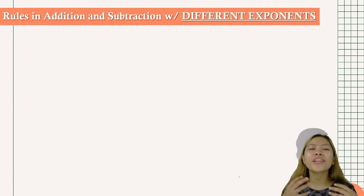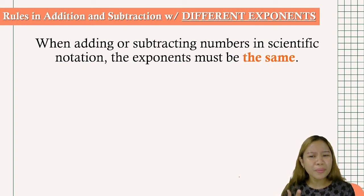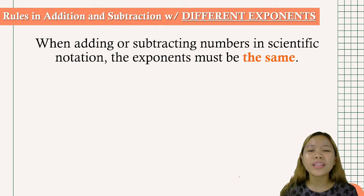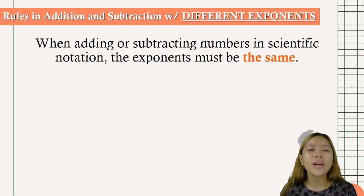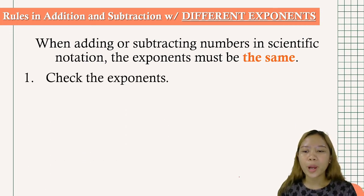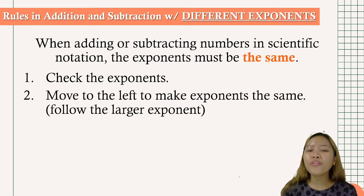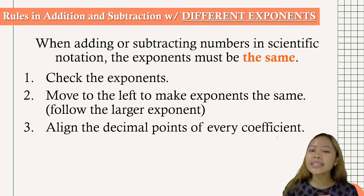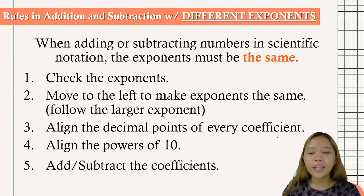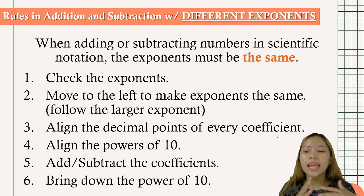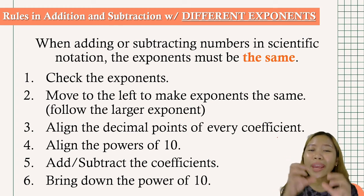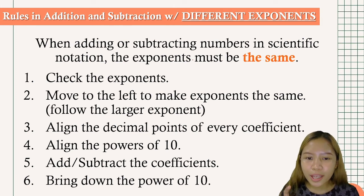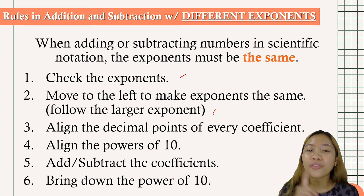Now, what if the numbers have different exponents? When adding or subtracting in scientific notation, the exponents must be the same. So first, check the exponents. Then move to the left to make the exponents the same — we need to follow the larger exponent. Next, align the decimal points of every coefficient, align the power of 10, add or subtract the coefficients, and bring down the power of 10.